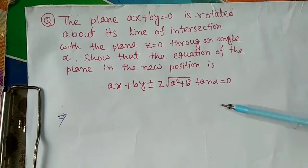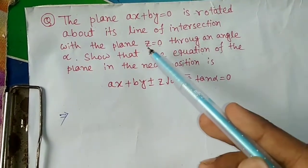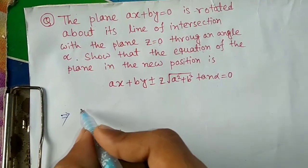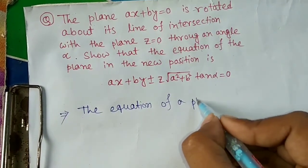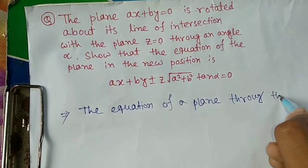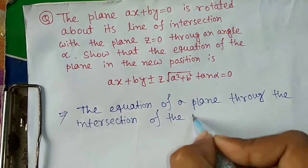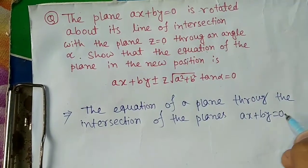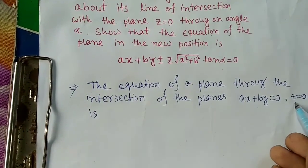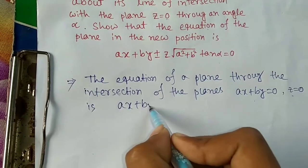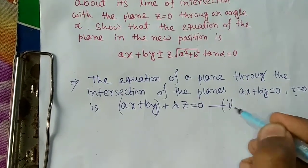So how do we solve it? First, we write the equation of a plane through the intersection of the planes ax plus by equals to 0 and z equals to 0. This gives us: (x plus by) plus lambda times z equals to 0. So we have named this plane and will work with this equation.